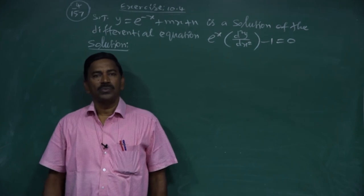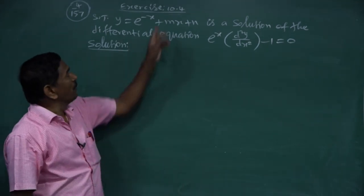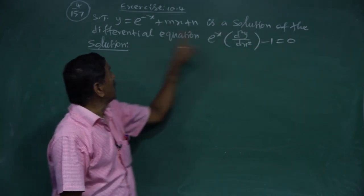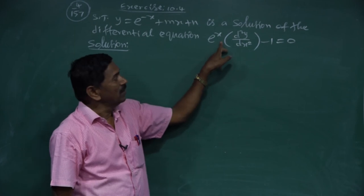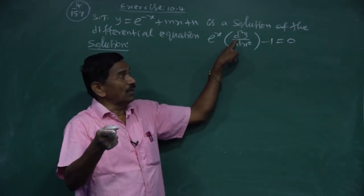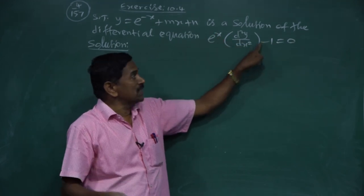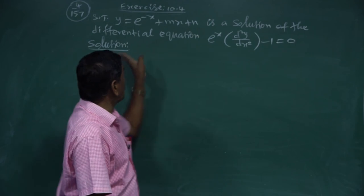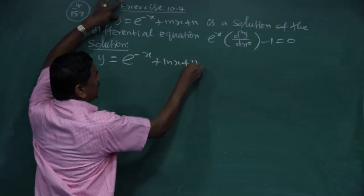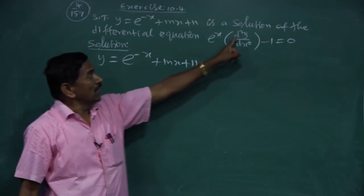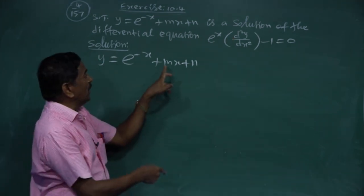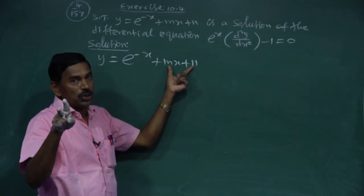Now, question 4 from exercise 10.4: show that y = e^(-x) + mx + n is a solution of the differential equation e^x·(d²y/dx²) - 1 = 0. Here d²y/dx² means y''. Since m and n are two arbitrary constants, we differentiate twice.